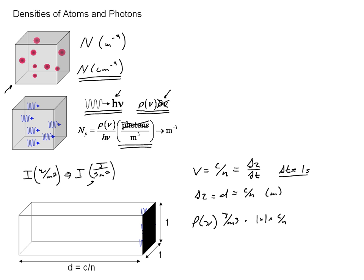And essentially, what we come up with is if we look at these units, and let's go ahead and put the units on that, meters in one second, we come up with rho of nu times c over n gives us units of joules per second or power.